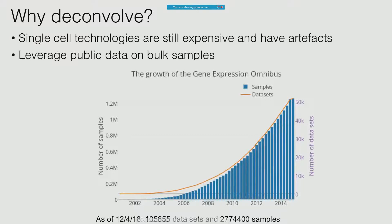This is a picture you've probably all seen before — the growth in the Gene Expression Omnibus since its inception. I looked a couple of days ago, and currently there are something like a million data sets and 2.7 million samples, and we want to be able to leverage these data in order to analyze things about the tumor microenvironment.